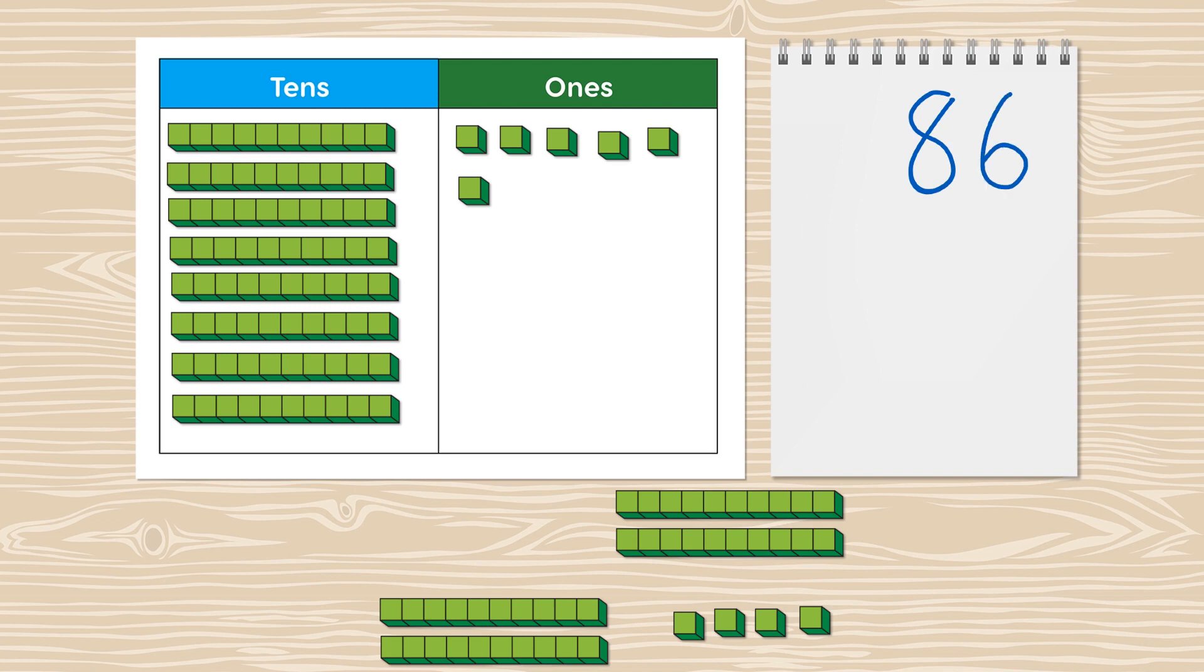24, so let's write 24 here. We can subtract by taking away blocks. Start with the ones first. Let's take away four ones: one, two, three, four. There are two ones remaining. Write two in the ones column. Now we